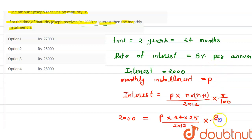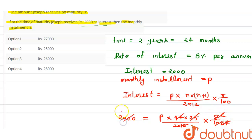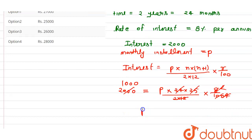Solving it: 12 × 2 = 24, so 24 cancels with 24, and 25 for 100 and 4 to 8, and 2 cancels, reducing 2000 to 1000. So the monthly installment P equals 1000 rupees.